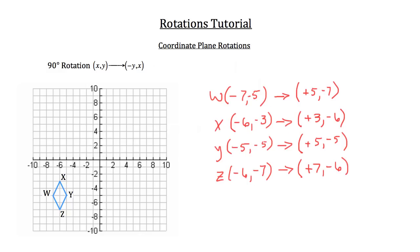Now let's go ahead and draw these new points. The new W is at positive 5, negative 7 — so 5 to the right of the origin and 7 down. The new X is at positive 3, negative 6 — 3 to the right and 6 down. The new Y is at 5, negative 5 — 5 to the right and 5 down. And the new Z is at 7, negative 6 — 7 to the right and 6 down. We can go ahead and connect them to form the new rhombus W, X, Y, Z prime.